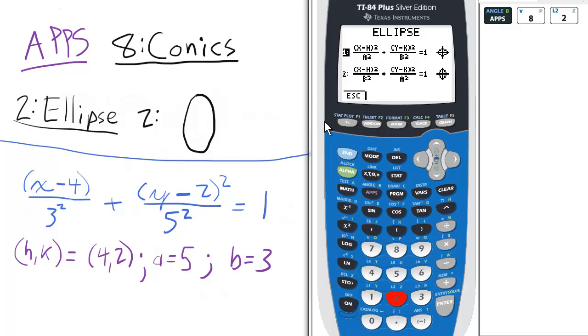So, for vertical major axis, a will still be larger than b. So actually, let's select option 2 here.